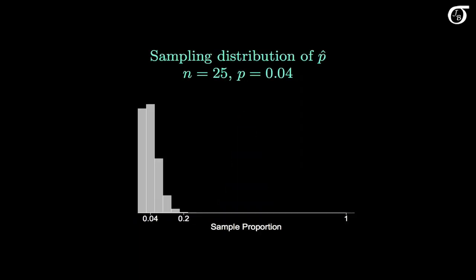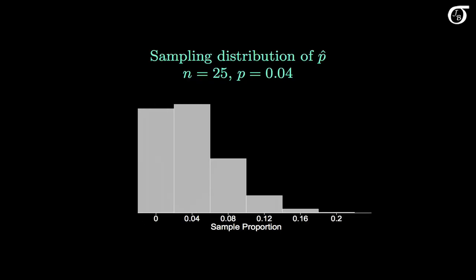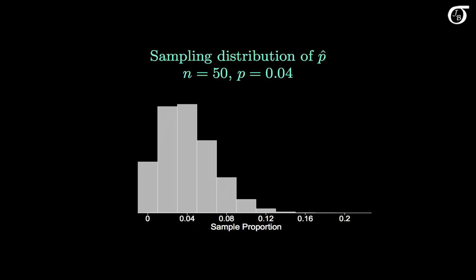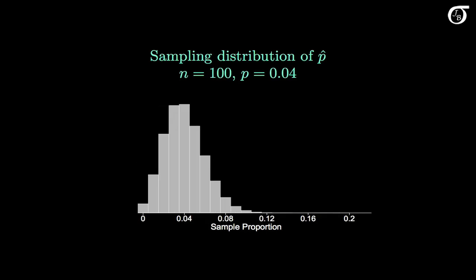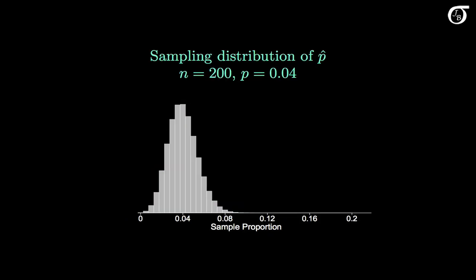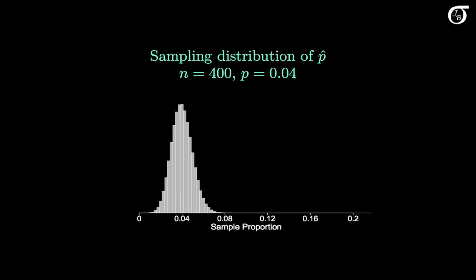Here's the sampling distribution of P-hat when n is 25 and P is 0.04. We can see there is some right skewness, and if we superimpose the appropriate normal curve, it doesn't fit the distribution all that closely. But as we increase the sample size — to 50, 100, 200, 400 — the distribution becomes more and more normal. At a sample size of 800, it's looking very normal, and a superimposed normal curve fits the distribution quite well.